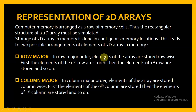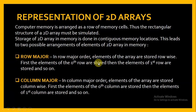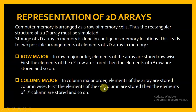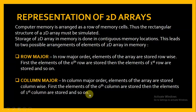In row major order, the elements of the array are stored row-wise. That is, first the elements of the 0th row are stored, then the elements of the 1st row are stored and so on. While in column major order, the elements of the array are stored column-wise. First the elements of the 0th column are stored, then the elements of the 1st column and so on.